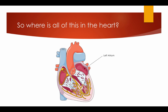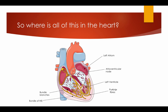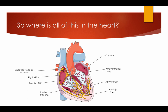The left atrium, the atrioventricular node, the left ventricle, the Purkinje fibres, the bundle branches, the bundle of His, the right atrium, and the sinoatrial node or SA node.